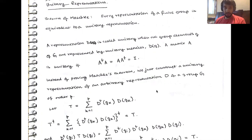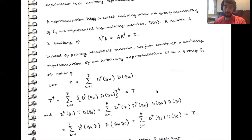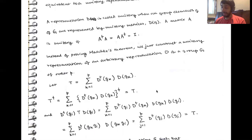A representation D(G) is called unitary when all the group elements G are represented by unitary matrices D(G), where a matrix A is called unitary when A-dagger A equals identity. Instead of proving this theorem, we'll construct a unitary representation for an arbitrary representation D of a group G of some order P. So let's start with T, which is the sum over k from 1 to P of D-dagger(G_k) D(G_k). The dagger of T equals T again.